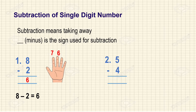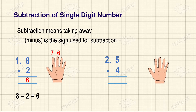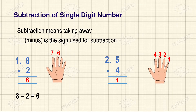We will see another example. Here they given 5 minus 4. First we need to keep 5 on our mind. Next, we need to tell in reverse. Before 5 is 4, 3, 2, 1. So the answer will be 1. So 5 minus 4 is 1.